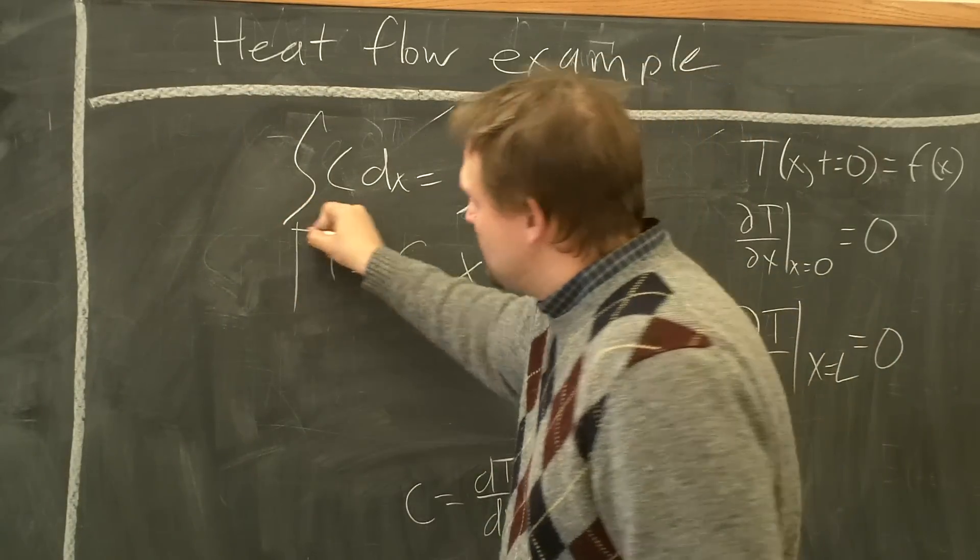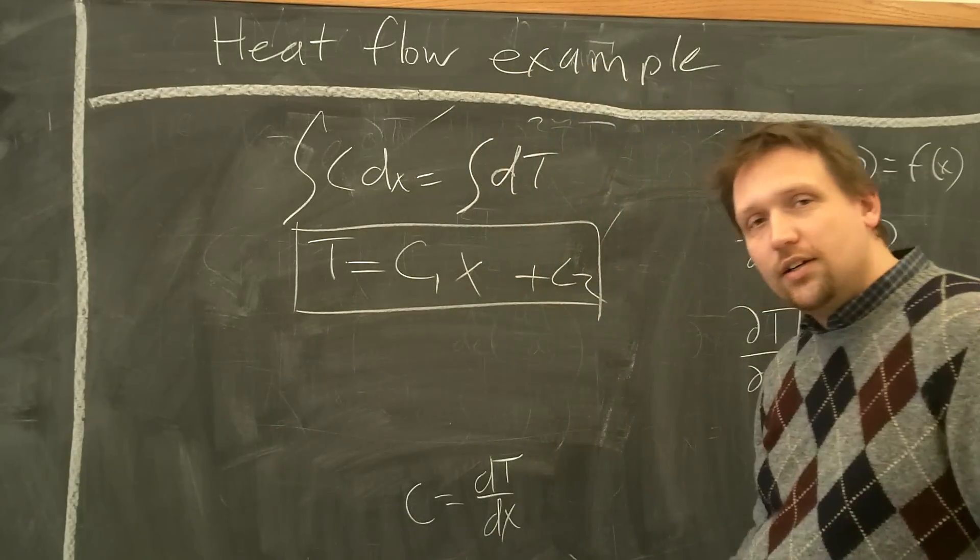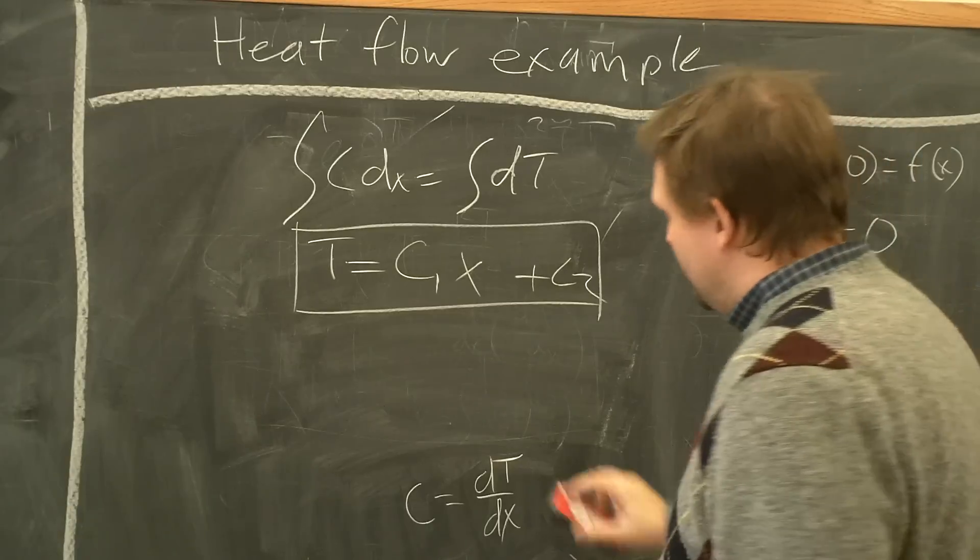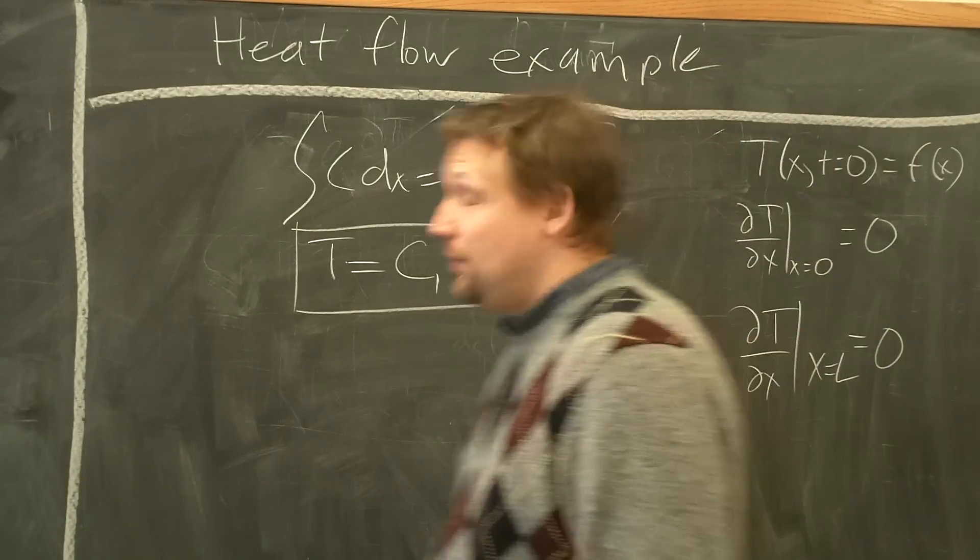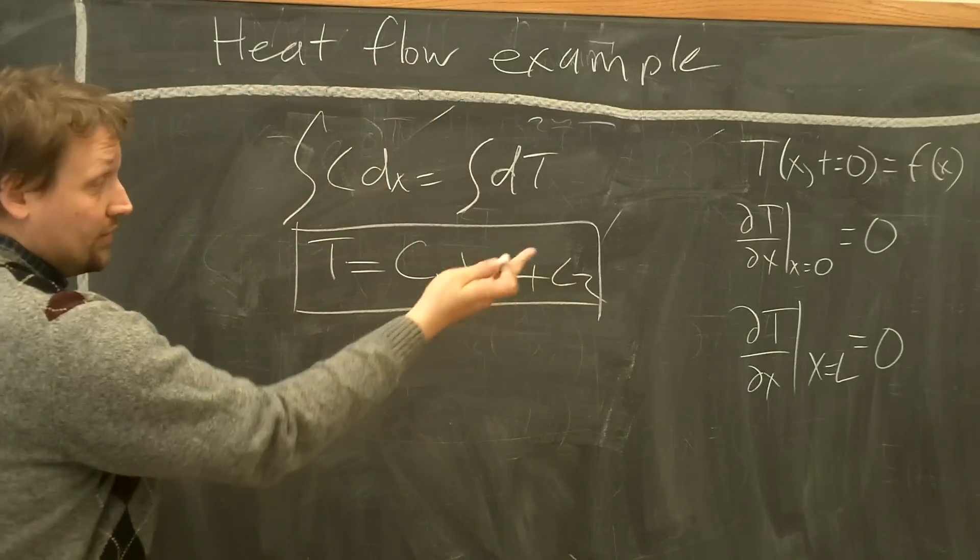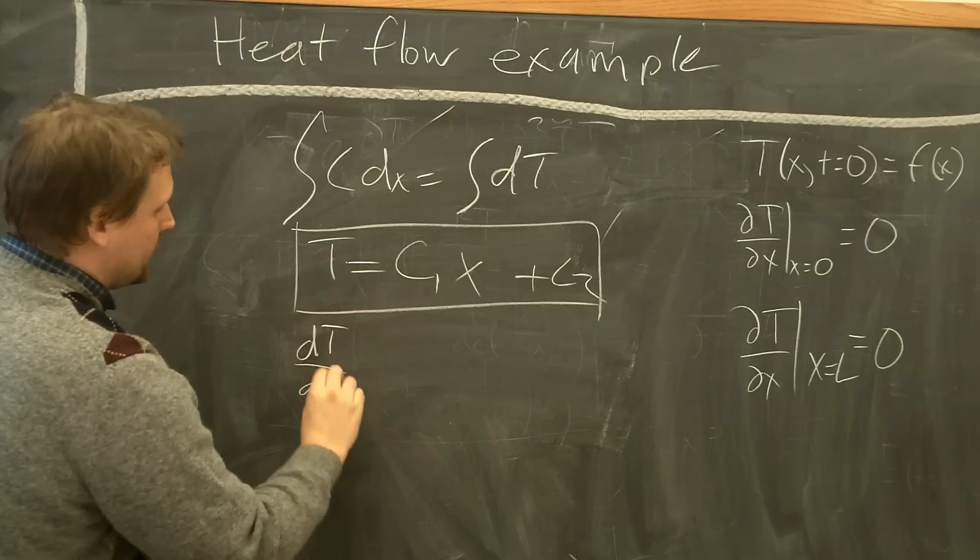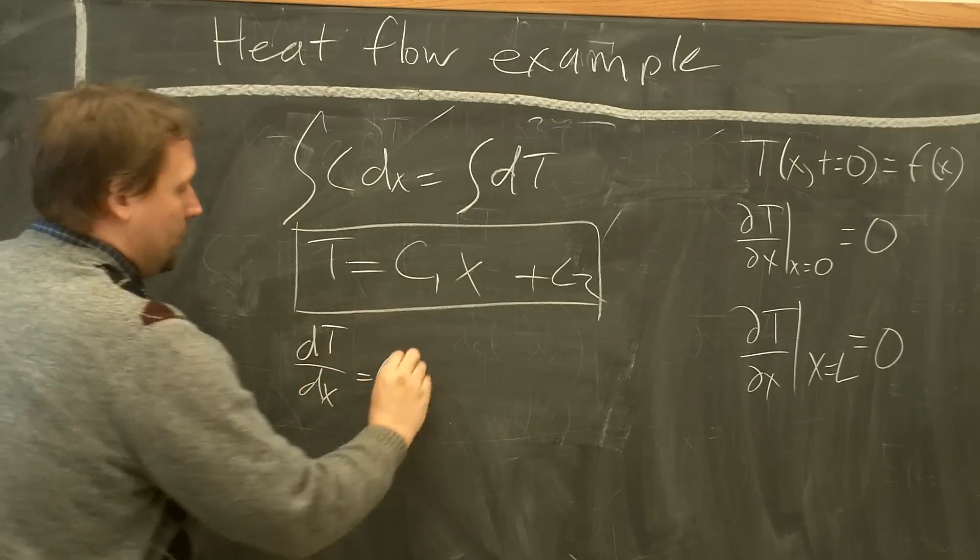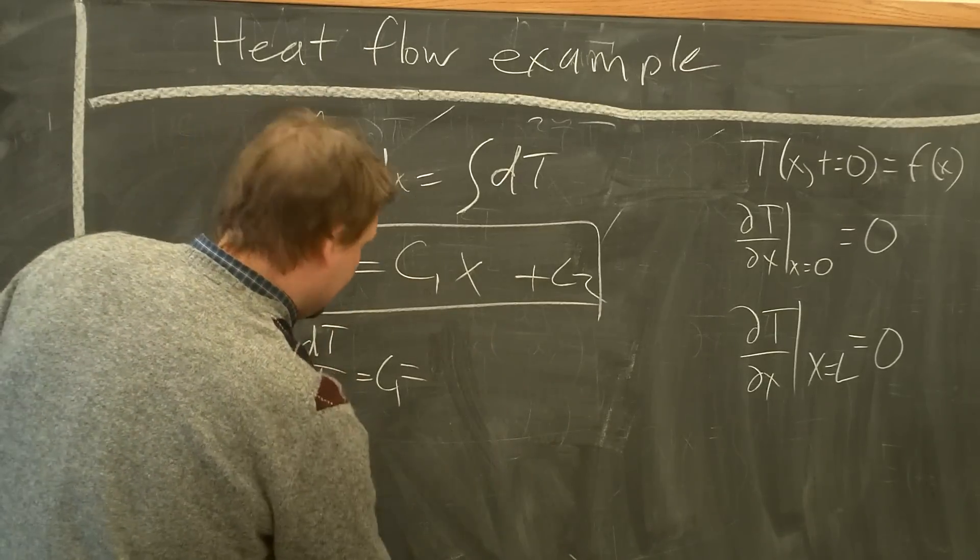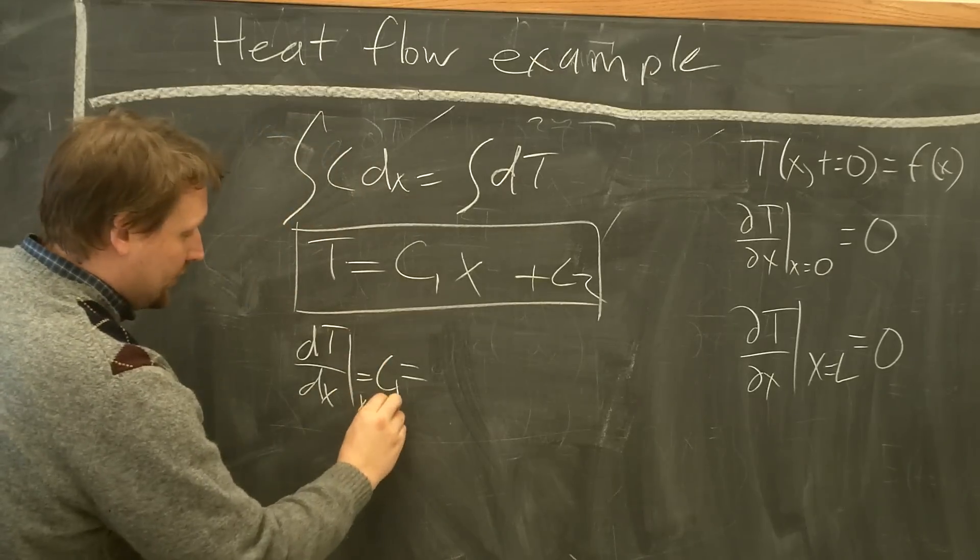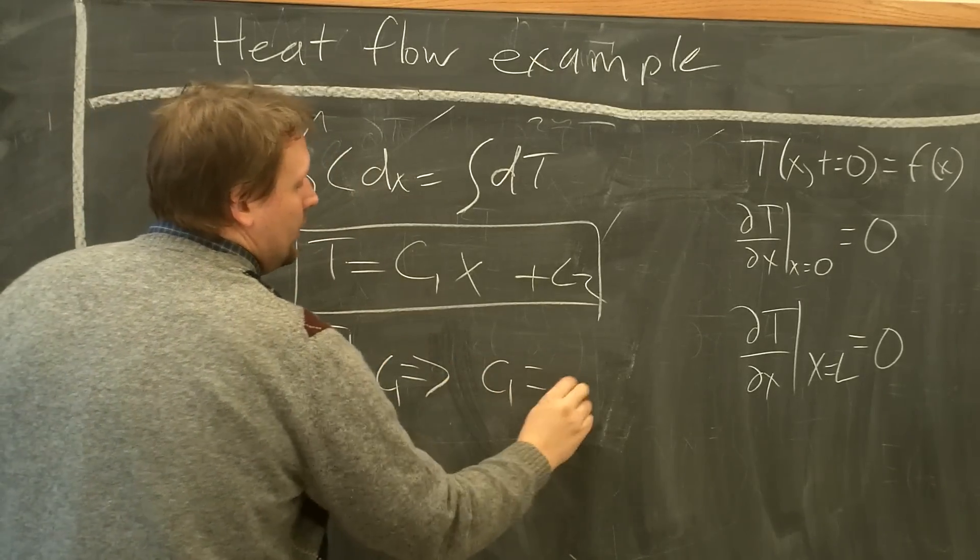At this stage, we apply boundary conditions. This is the solution, this is the temperature distribution at steady state as a function of position. But we don't know what C1 and C2 are. And this is where the boundary initial conditions come in. So first, dt dx equals 0. dt dx equals C1 at x equals 0, I should say, equals C1. Which gives us C1 equals 0. C1 equals 0.